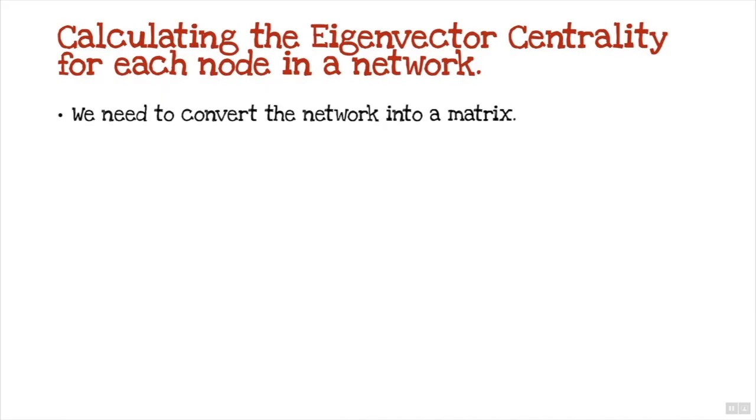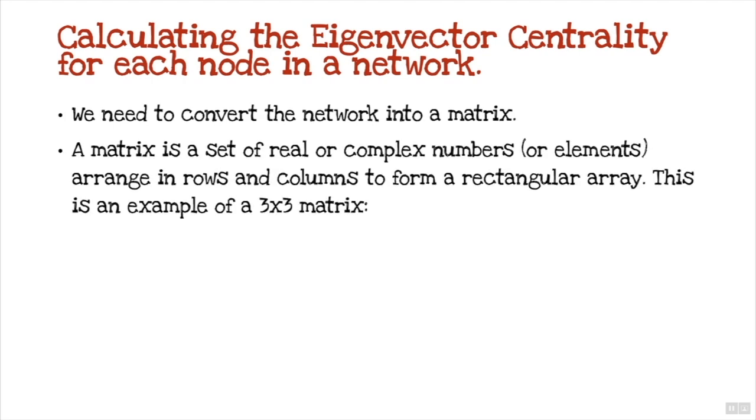Calculating the eigenvector centrality for each node in a network, we need to convert the network into a matrix first of all. A matrix is a set of real or complex numbers or elements arranged in rows and columns to form a rectangular array. This is an example of a three by three matrix which we're going to use.